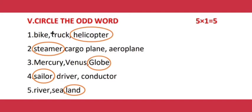Number three: Mercury, Venus, Globe. The correct answer is Globe. Number four: Sailor, Driver, Conductor. The correct answer is Sailor. Number five: River, Sea, Land. The correct answer is Land.